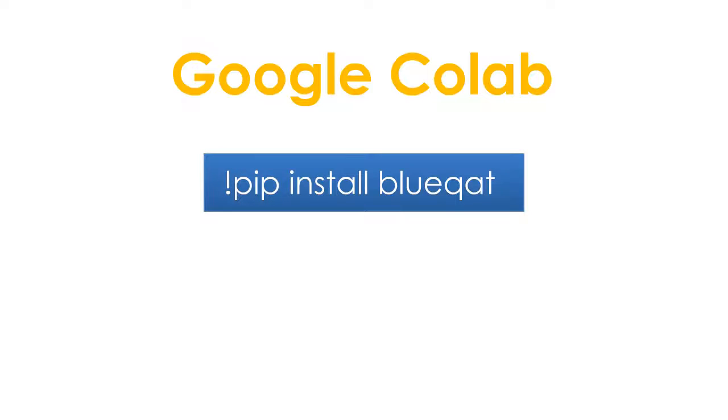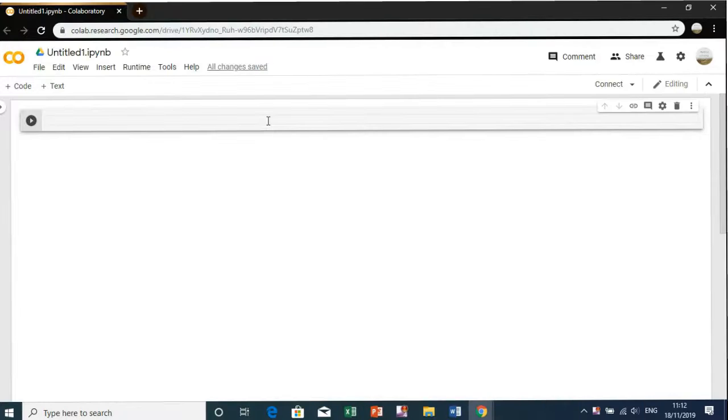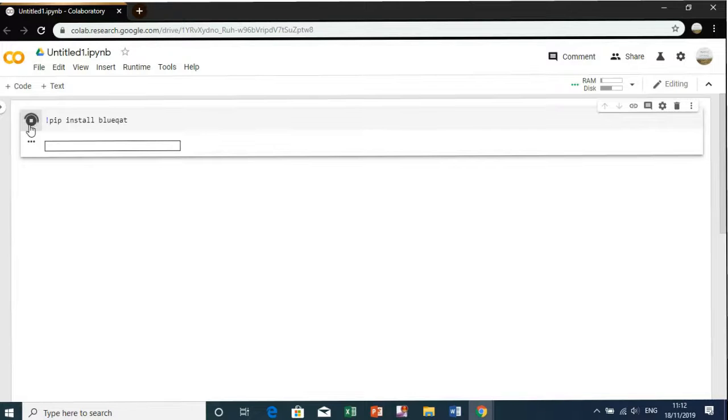Now let's try it on Google Colab. Type in the code that was shown earlier. Then click on play button. Wait for the complete installment of BlueCat in Google Colab.